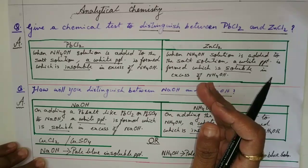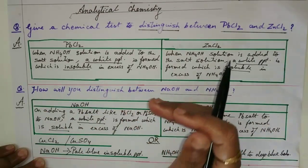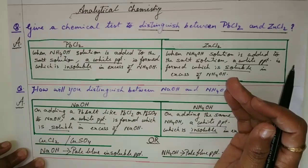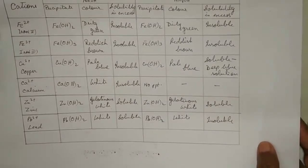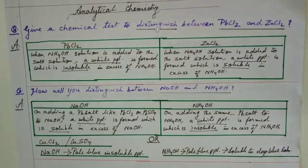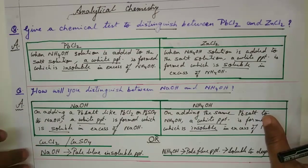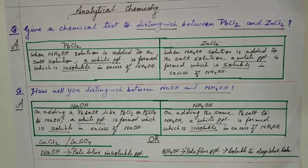I have provided the link to the notes in the description box, which also has a well-structured table to help you learn the color and solubility of the precipitate, which is very important from the examination point of view. Please learn the color and the solubility of the precipitates. Also, please learn and check that you are able to write all the chemical equations correctly and balance them.